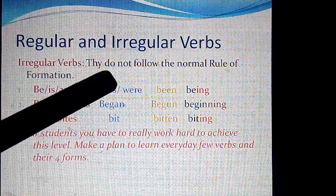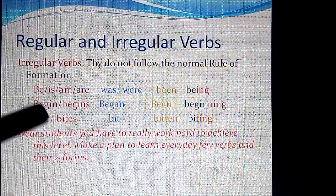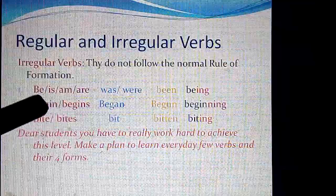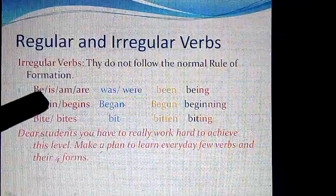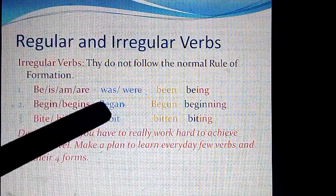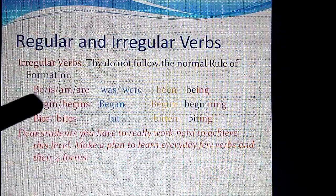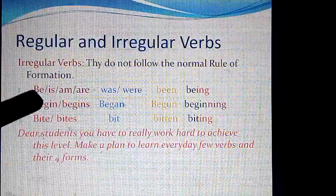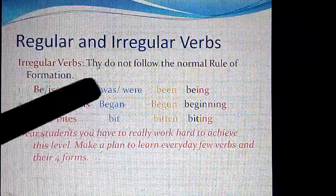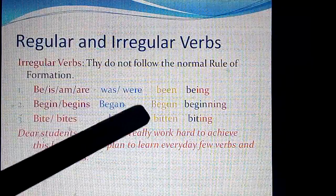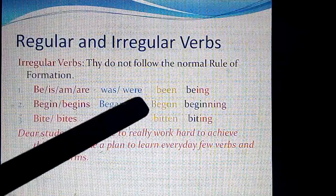Irregular verbs do not follow the normal rule of formation. For example, the verb 'be' is commonly used as 'is', 'am', or 'are'. These are the same form of the root verb 'be'. So 'is', 'am', and 'are' are the forms used along with it. Past tense is 'was' and 'were' — this is the V2 form.